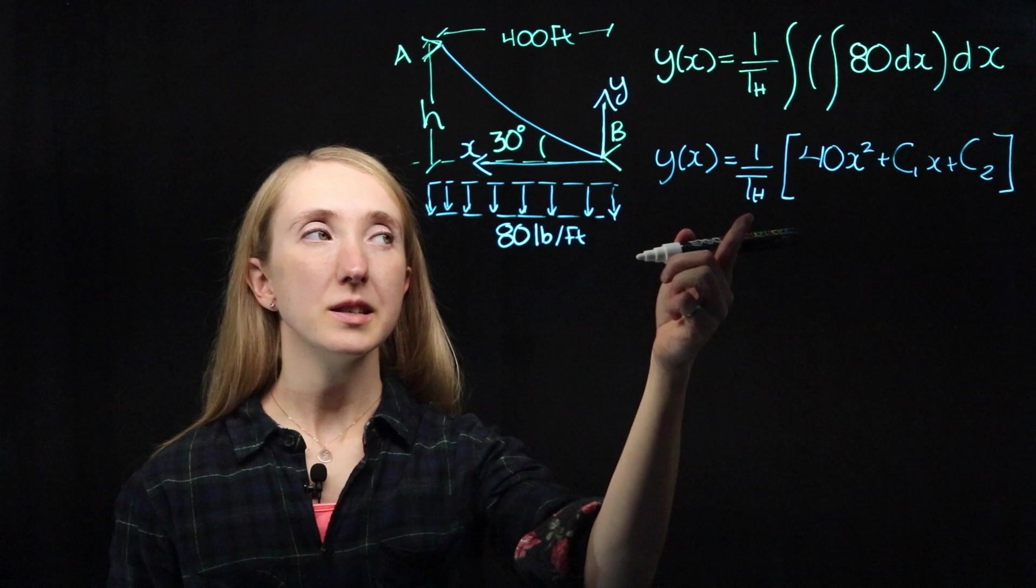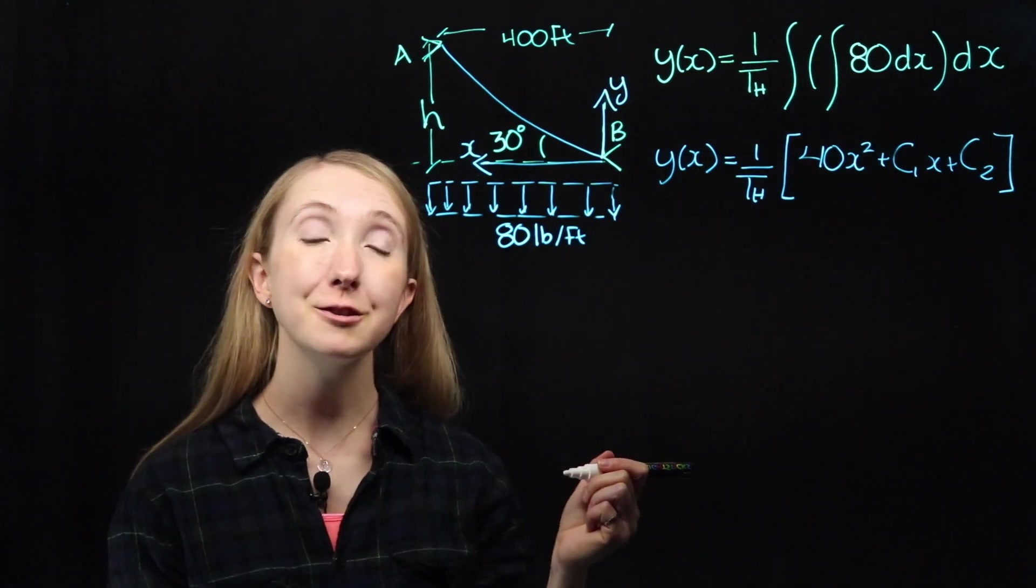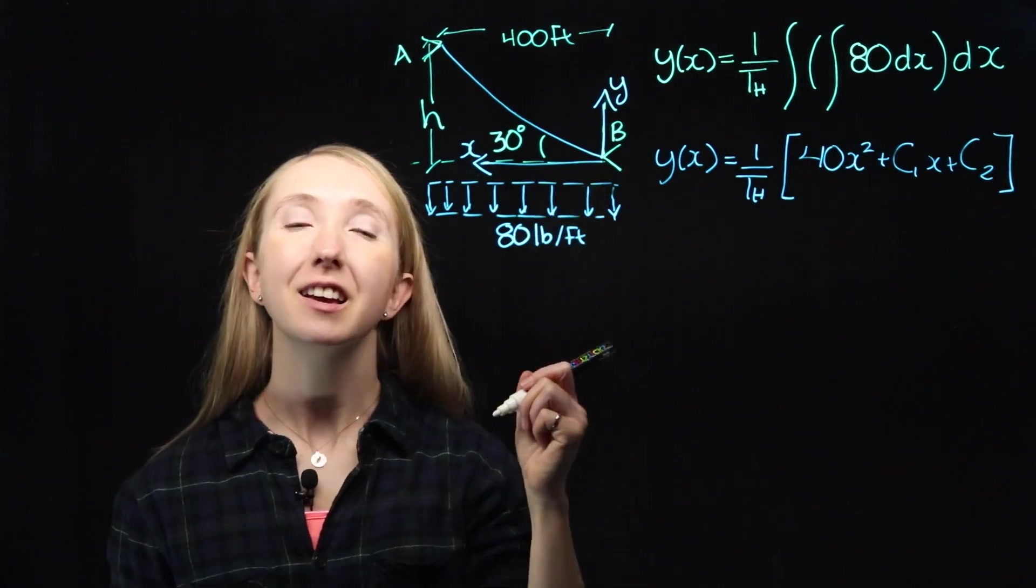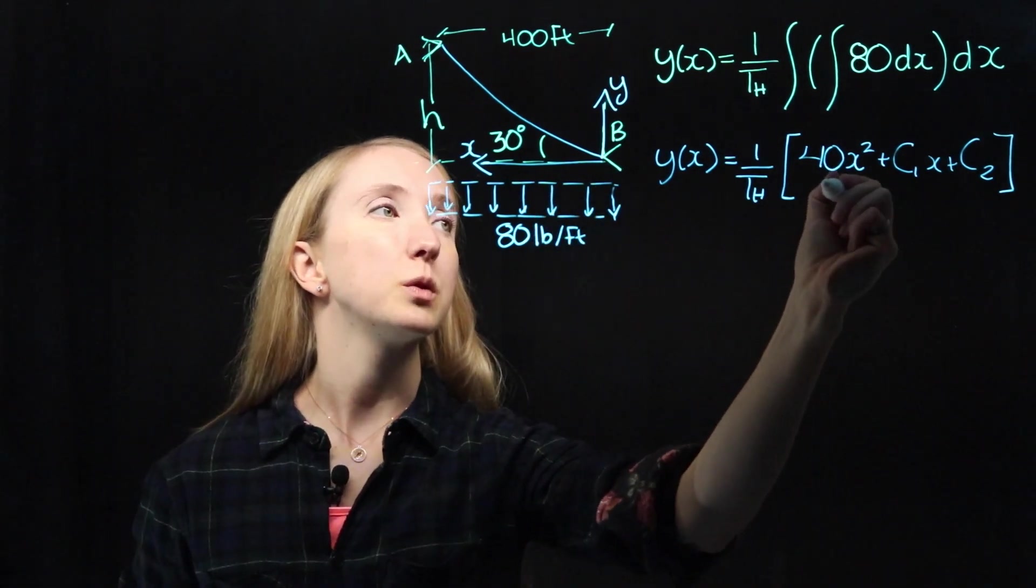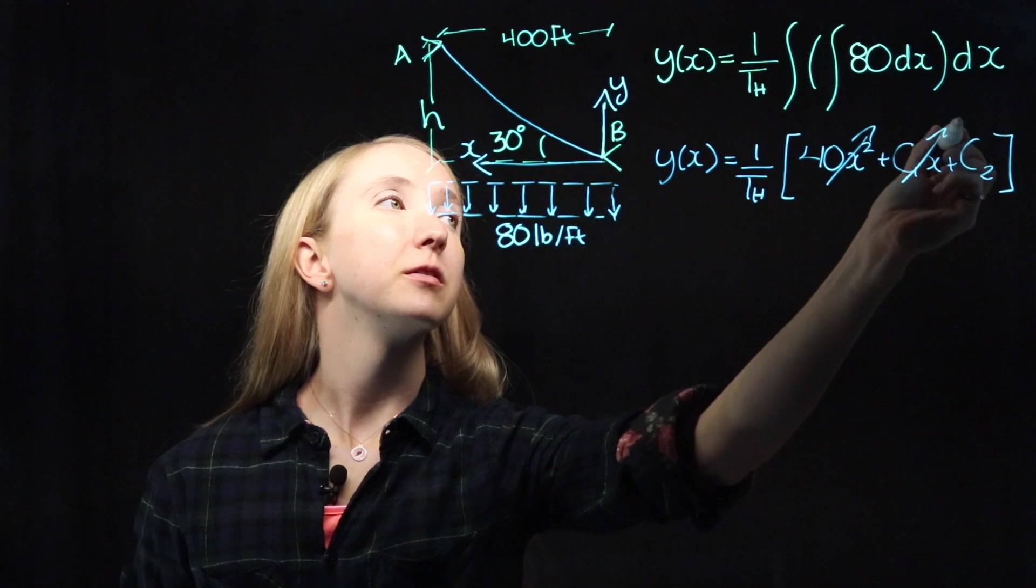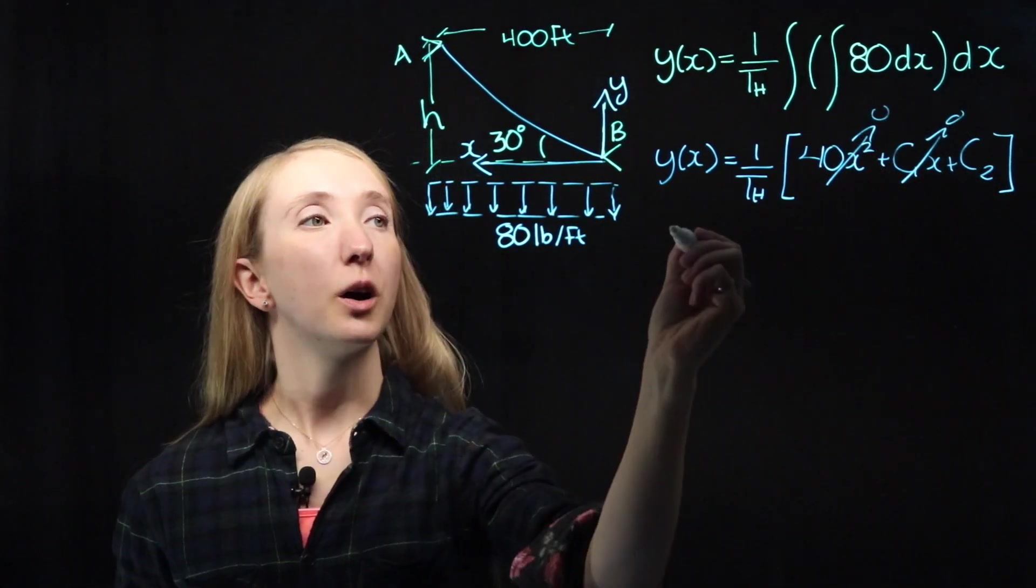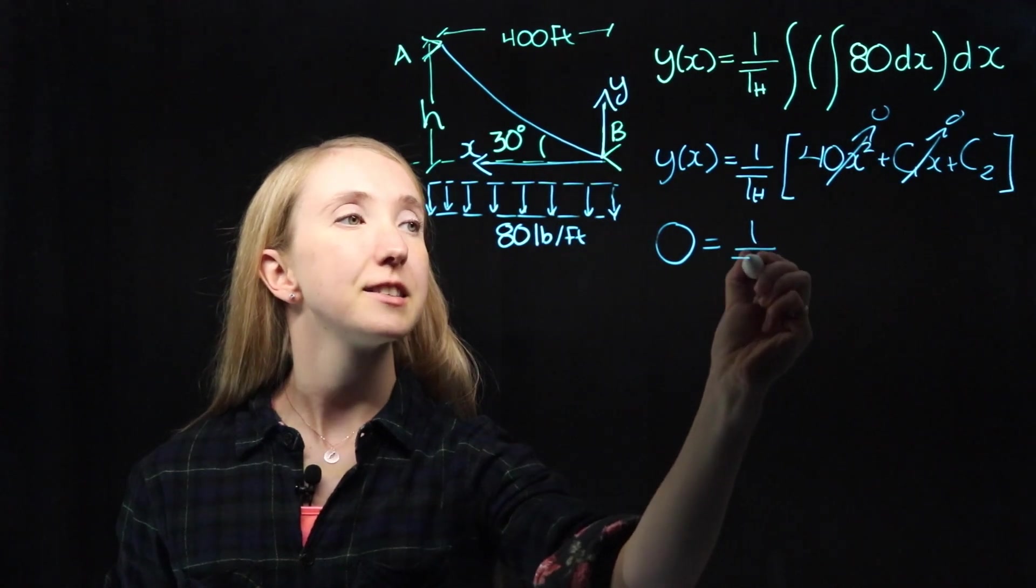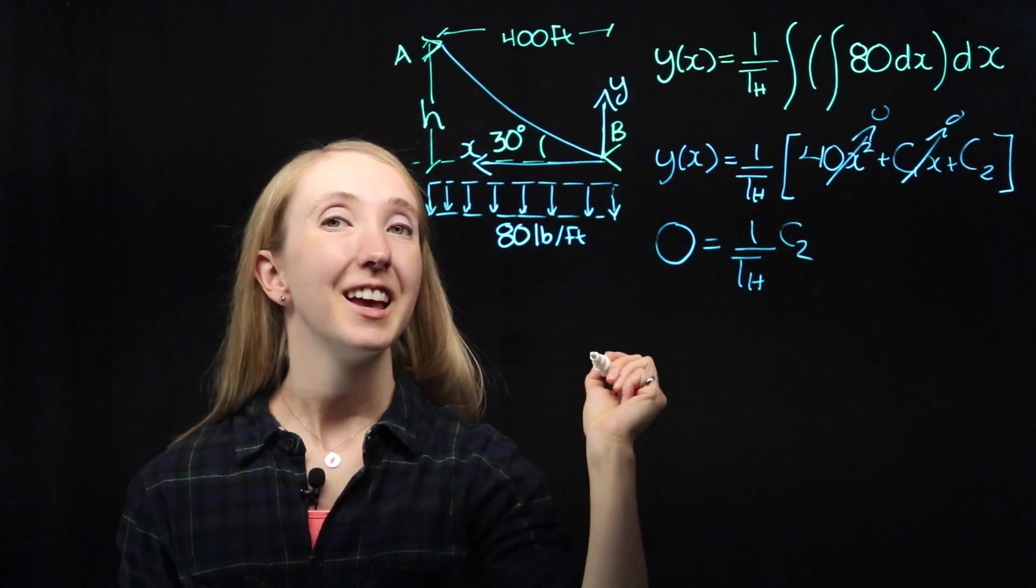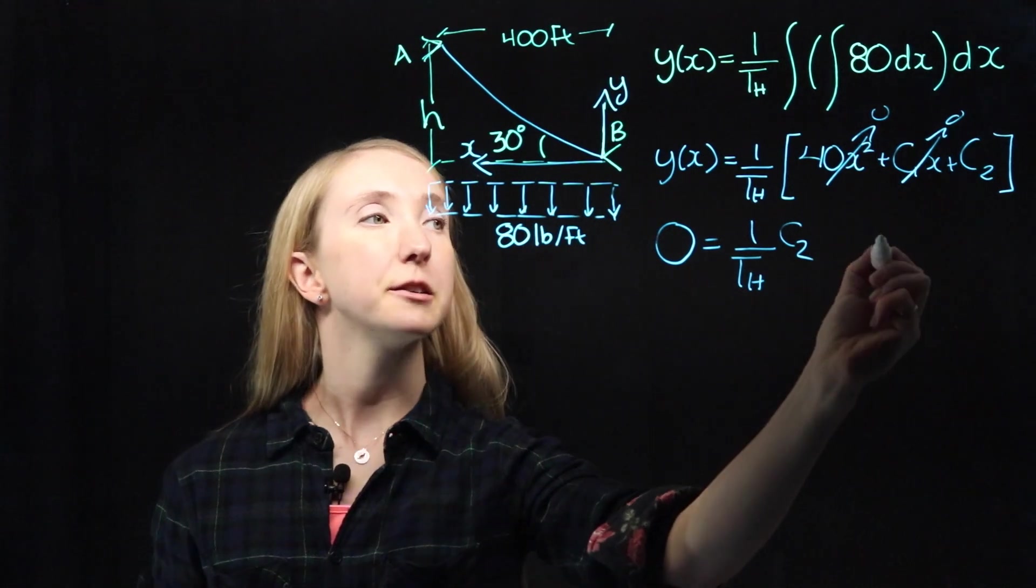Now we can use this equation and a boundary condition at our origin to help us solve C2. Because at our origin, x is equal to 0, and y is also equal to 0, which means that C2 must also be 0.